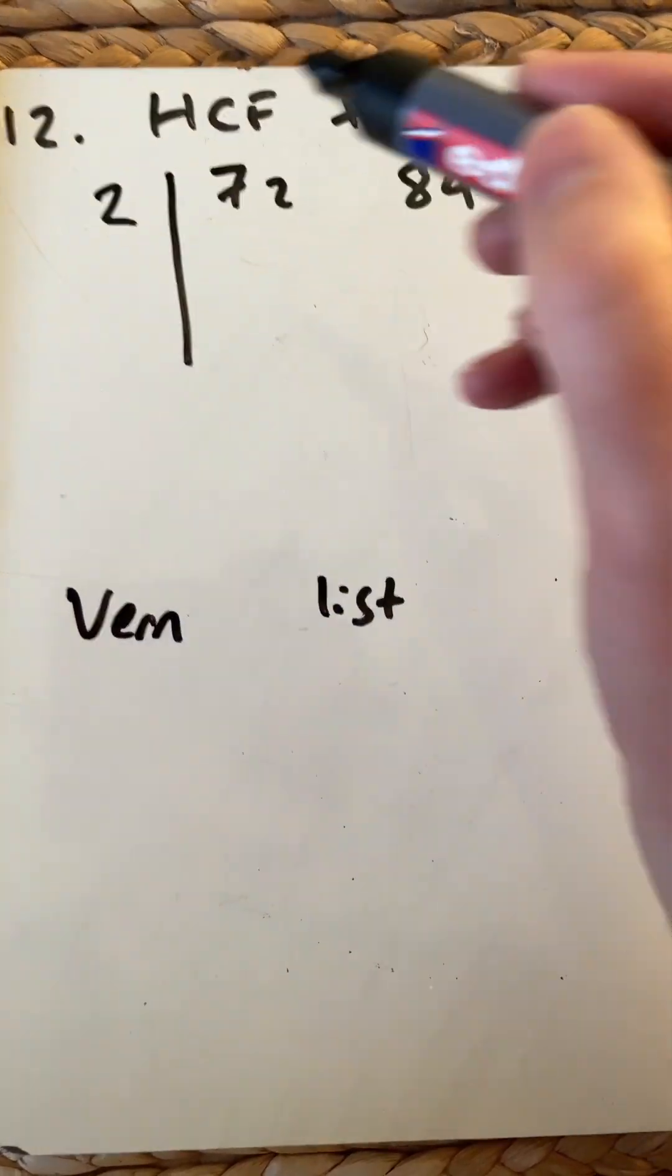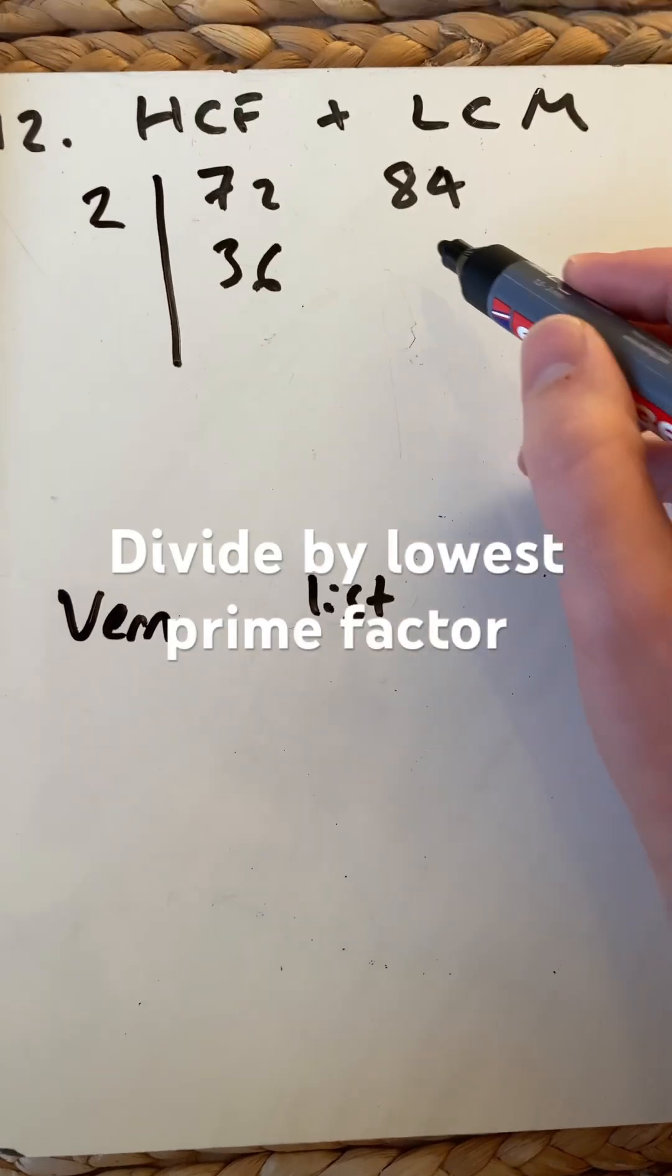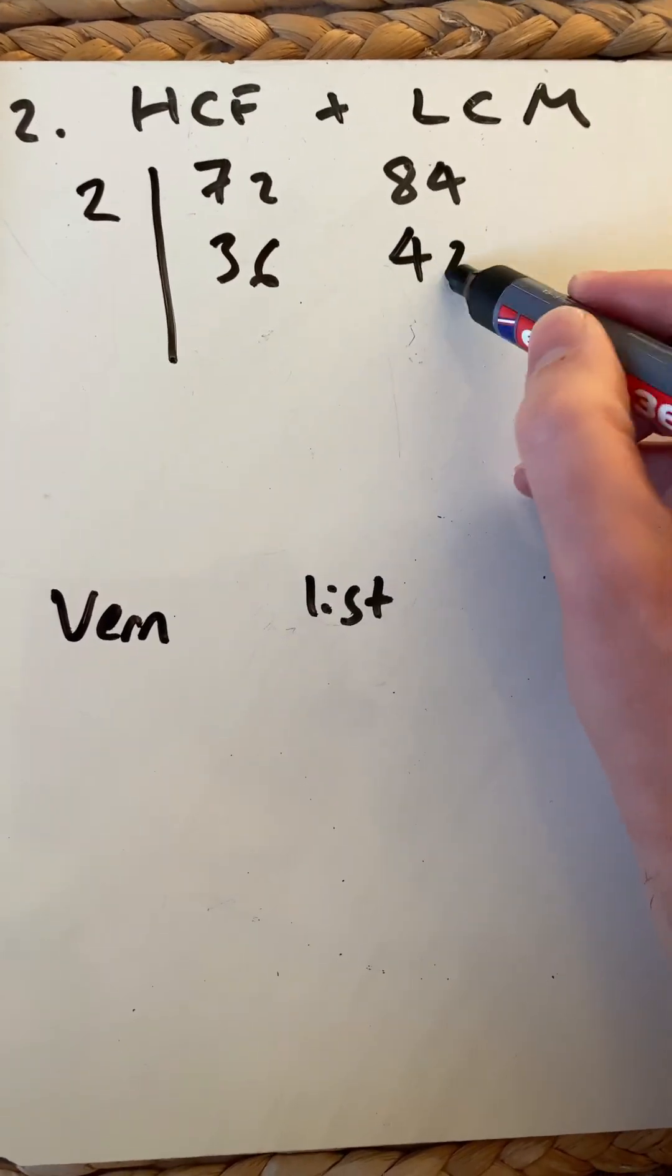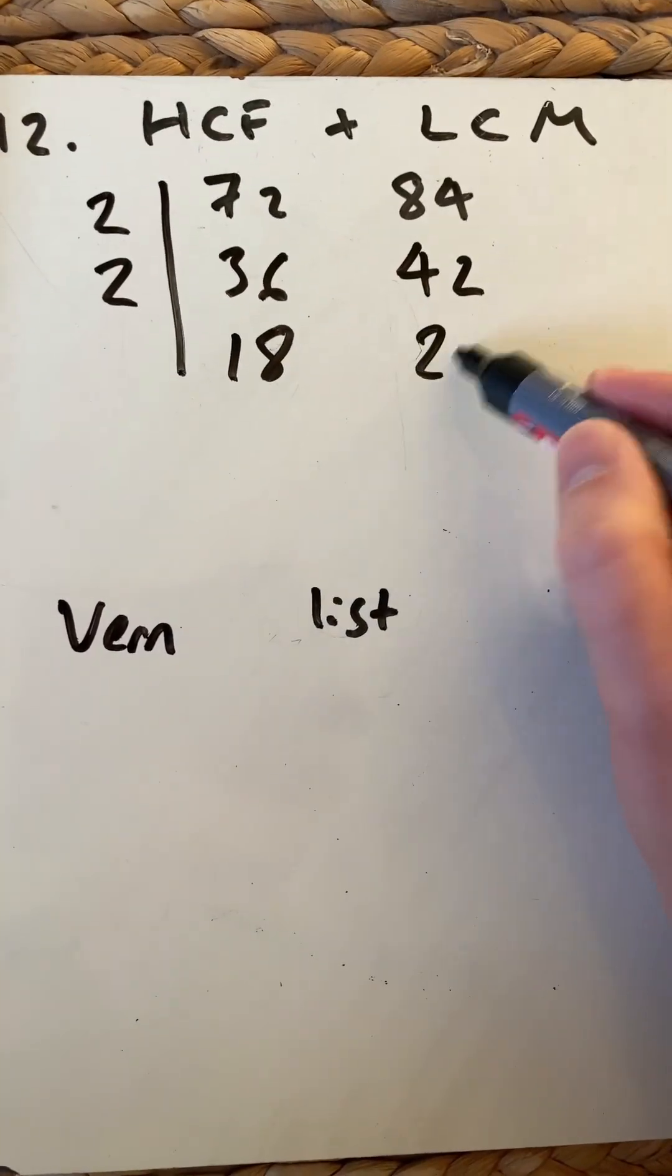Put a line down there. Divide by the lowest prime factor, 2. So 72 divided by 2 is 36, and 84 is 42. Divide again by 2, which gives 18 and 21.